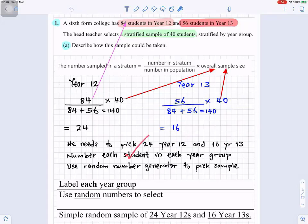You would number each student - give each student a number in each year group. Use random number generator to pick sample. So this is it written neatly down here: Label each year group, use random numbers to select. And then simple random sample of 24 Year 12s and 16 Year 13s. That's how you do question number one, part a.